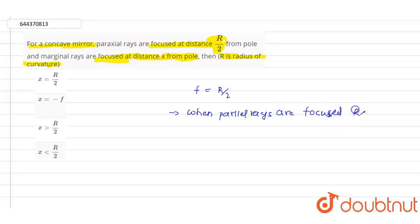When parallel rays are focused at point r divided by 2, that means the right-hand side to the mirror, then marginal rays are focused on the left-hand side of the mirror. So we can write x equals minus f.